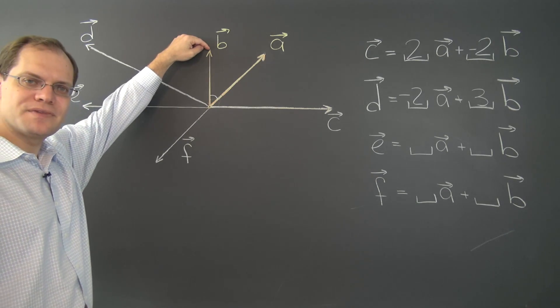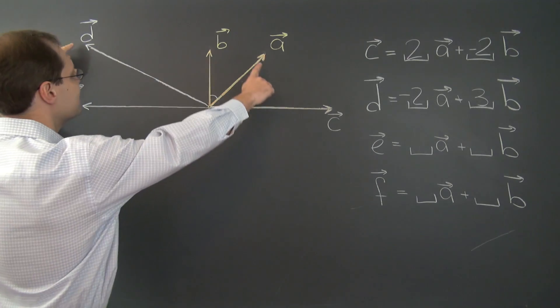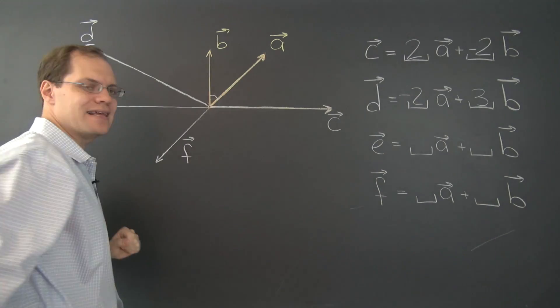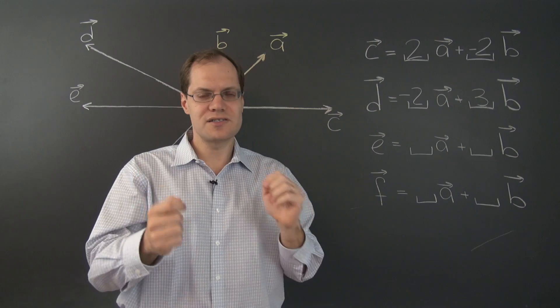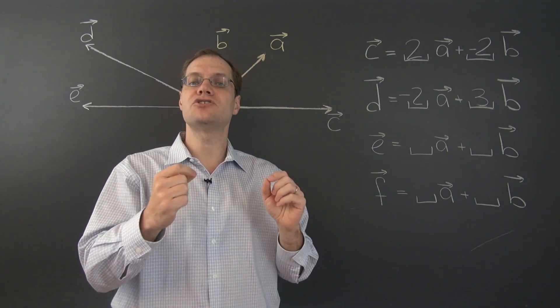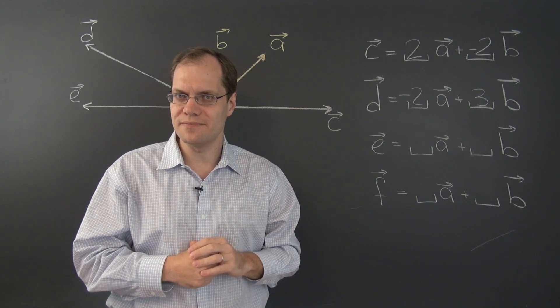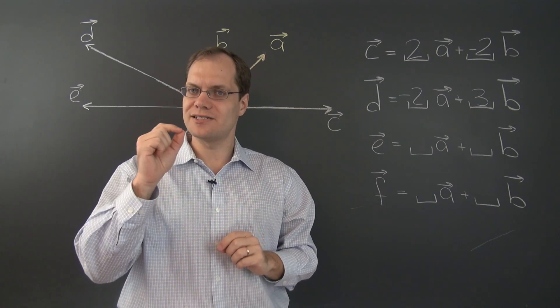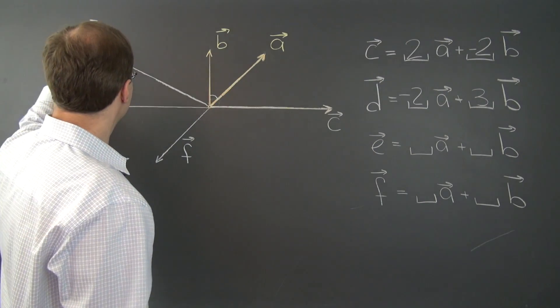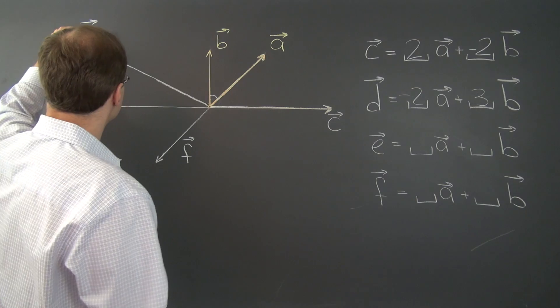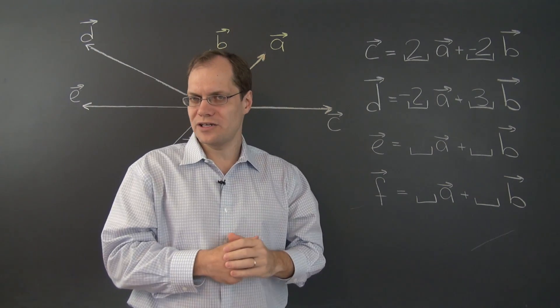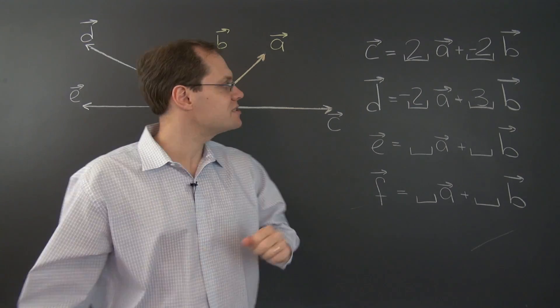And it will also help us with the example that we'll consider in the next video. Here is how you can think about it. Think of the vector b. It lies on the line connecting a and d. Now we have seen a situation like that before. We were considering all possible combinations of two vectors such that the coefficients add up to one.